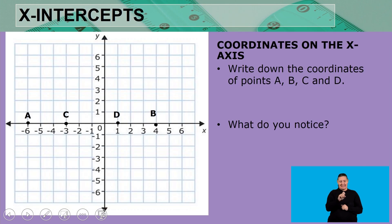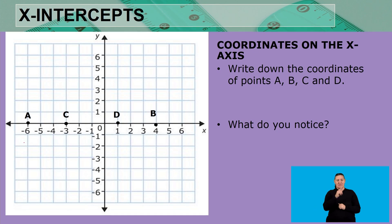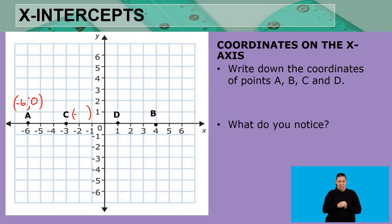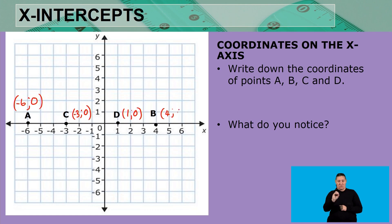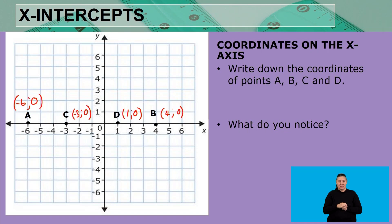Now let's look at x-intercepts — coordinates on the x-axis. Write down the coordinates of A, B, C, and D. A is negative six and zero; C is negative three and zero; D is one and zero; B is four and zero. Remember coordinates are written as x and y. What do you notice? The y value is equal to zero on any point that is on the x-axis.